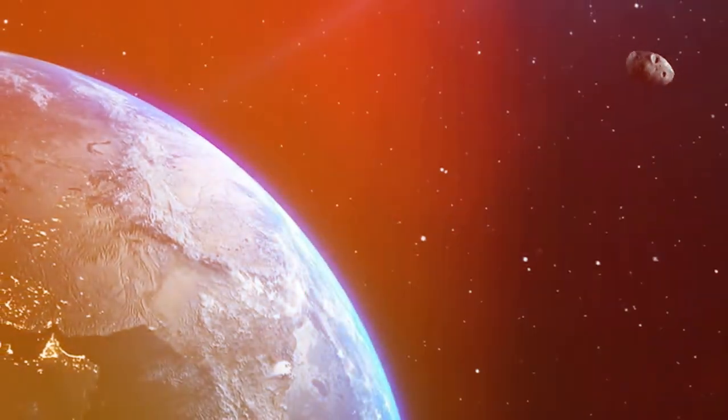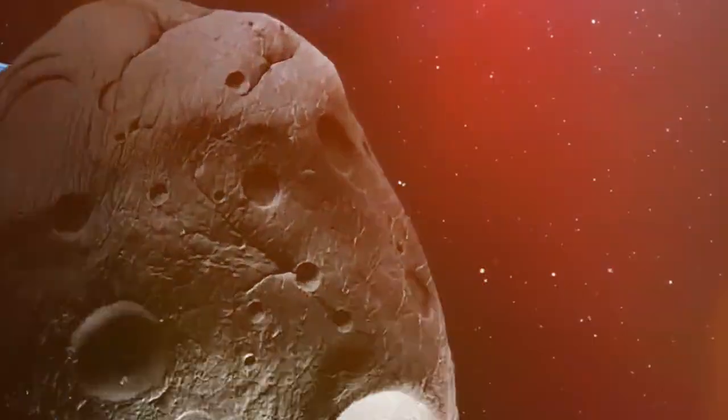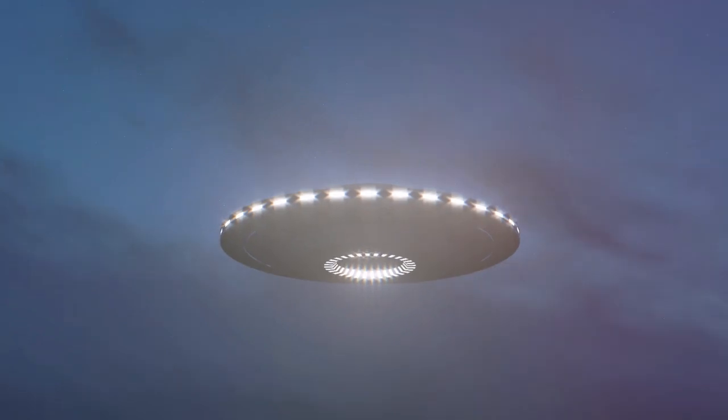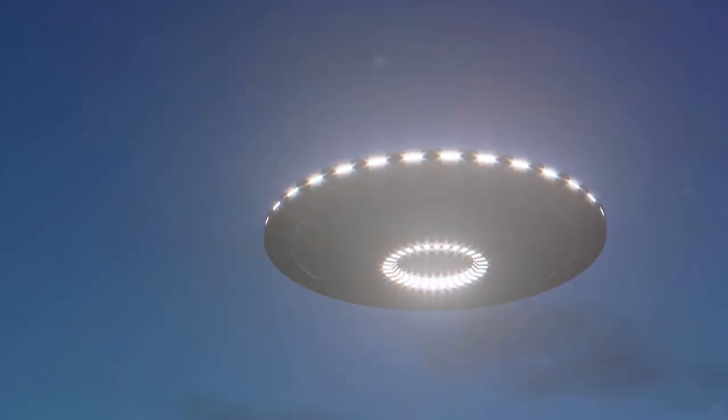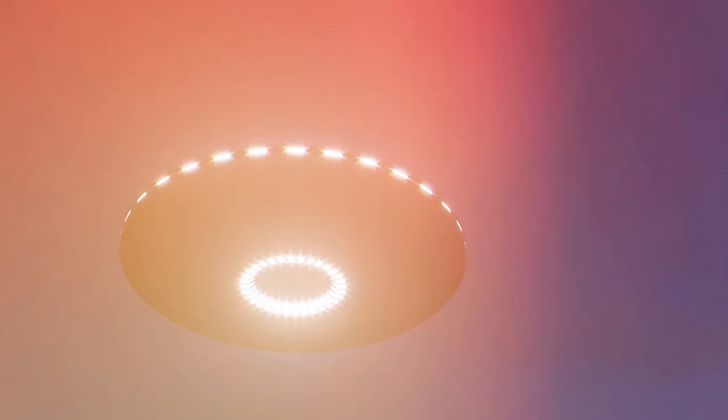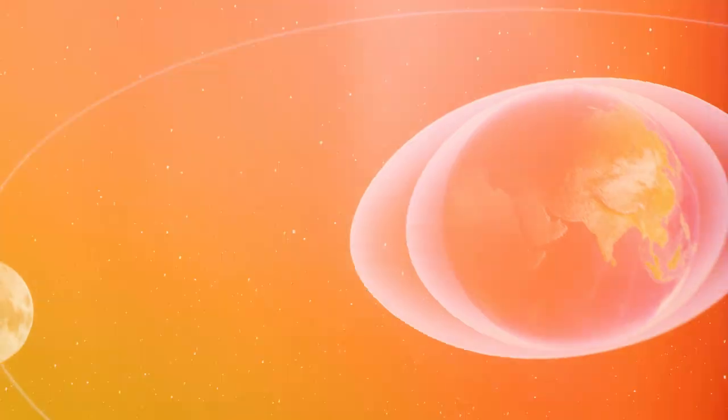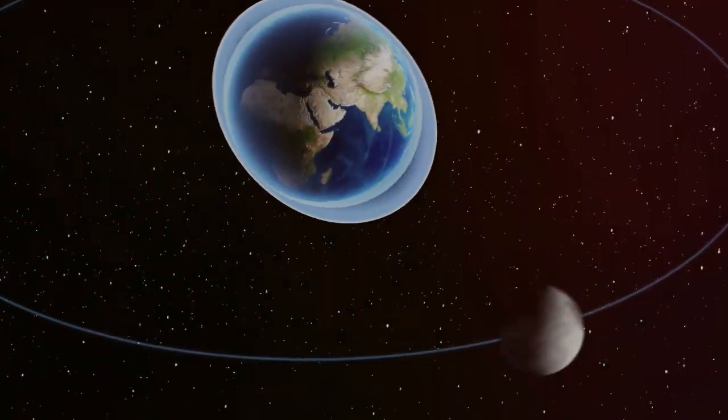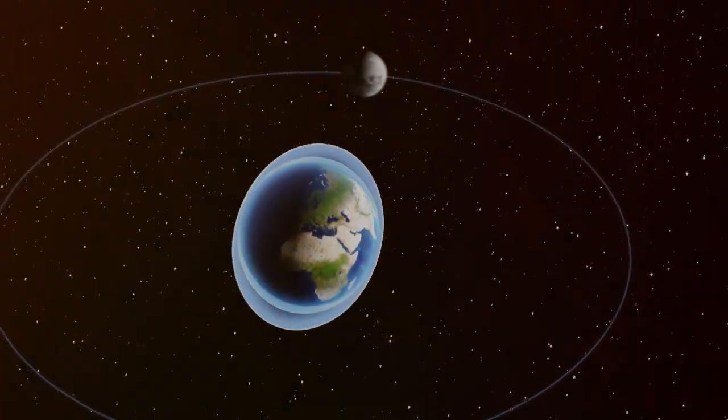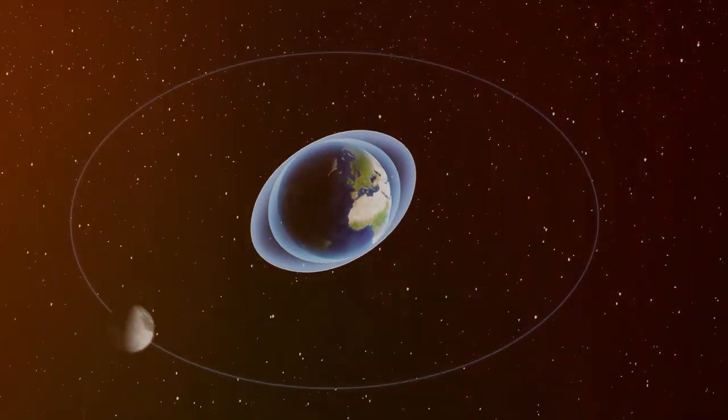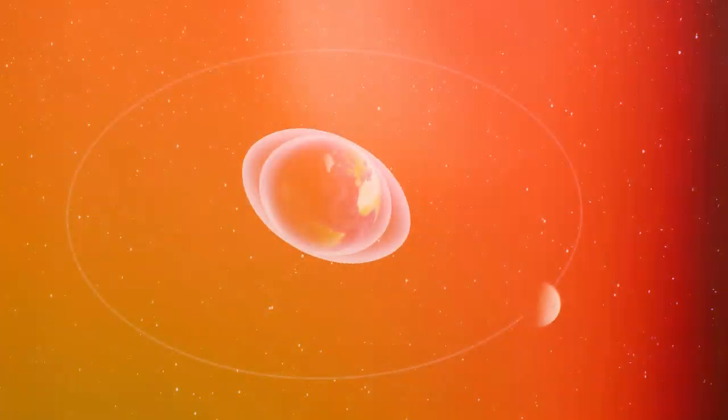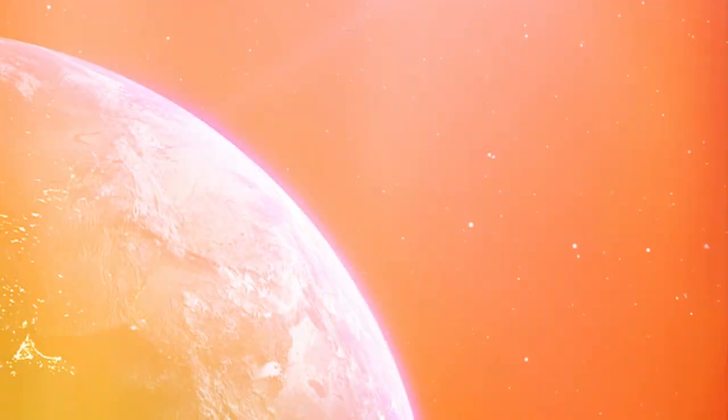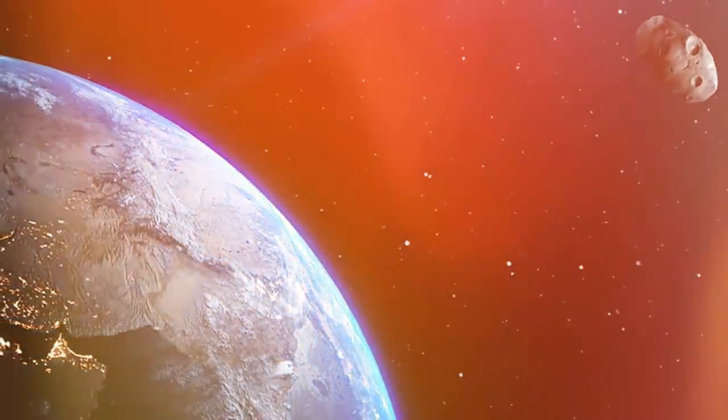The space rock could be anywhere between 16 and 138 feet in diameter, potentially larger than the asteroid that entered Earth's atmosphere over Chelyabinsk, Russia in 2013. The Chelyabinsk asteroid exploded in the air, releasing 20 to 30 times more energy than the atomic bomb dropped on Hiroshima, Japan, and generating brightness greater than the sun. Debris from the space rock damaged more than 7,000 buildings and injured more than 1,000 people.